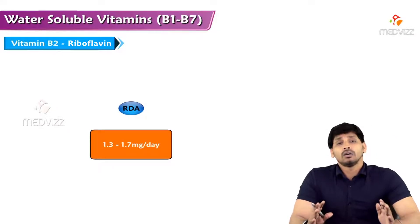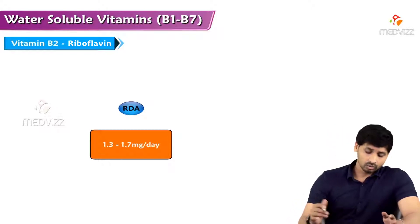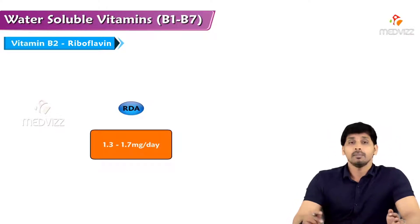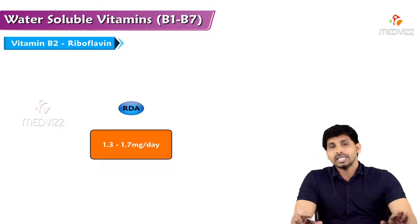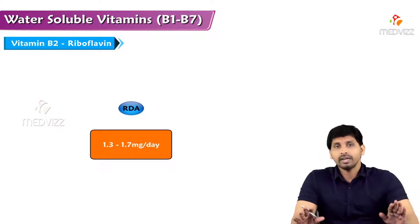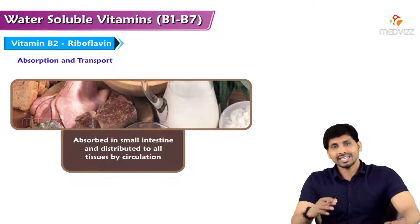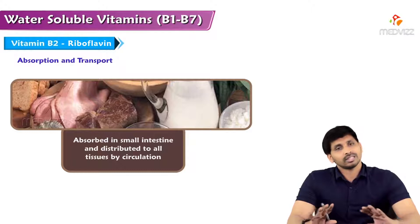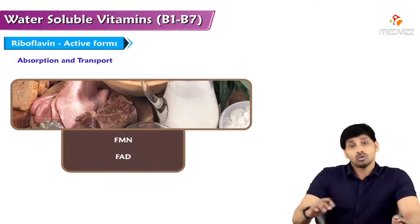How much riboflavin are you supposed to take per day? The recommended daily allowance is 1.3 to 1.7 milligrams per day. In case of pregnancy and lactation, this requirement will be enhanced. Being a water-soluble vitamin, absorption and transport occurs by simple diffusion.